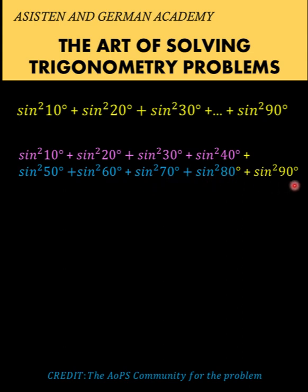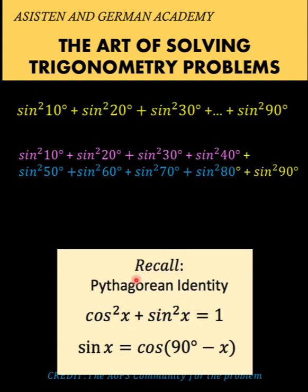Now let's recall these two identities. We have the Pythagorean identity that says cosine squared of an angle x plus sine squared of the same angle is equal to 1. And the cofunction identity: sine of x is equal to the cosine of the complement of x, which is 90 degrees minus x. We are going to use these two identities to simplify our expression.